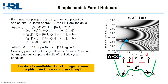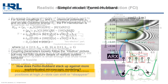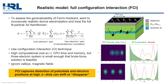So to assess the generalizability of Fermi-Hubbard, we really want to incorporate realistic device electrostatics and treat the full multi-particle Hamiltonian. We want to solve the full three-body Schrödinger equation and use techniques from quantum chemistry to approximate the microscopic eigenstates. The technique we use to do this is called configuration interaction, or CI,